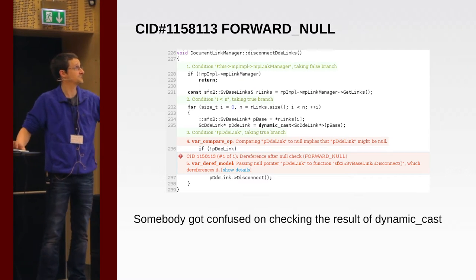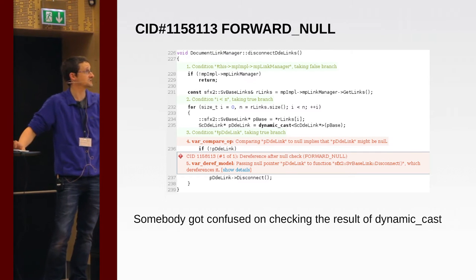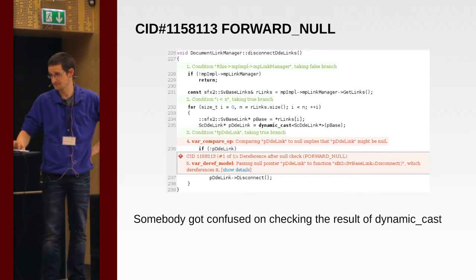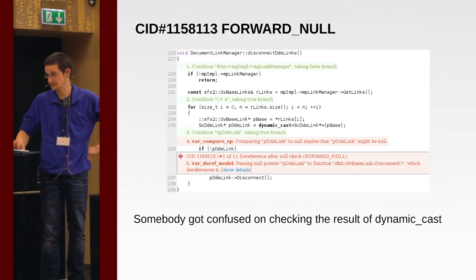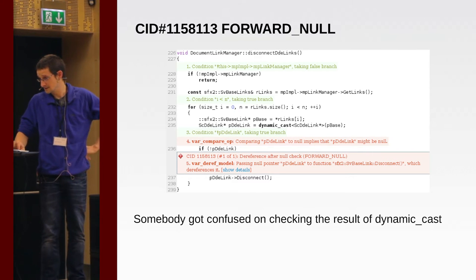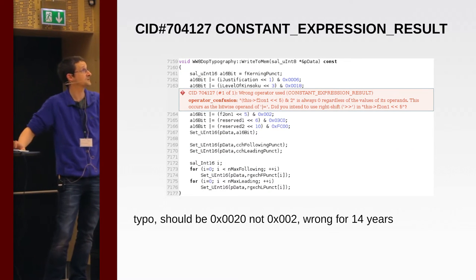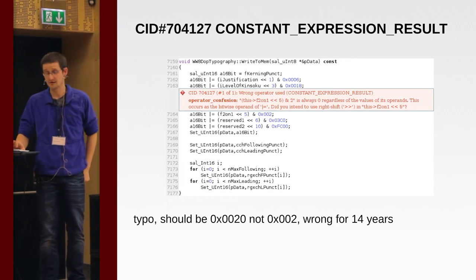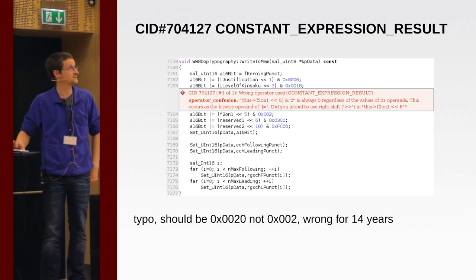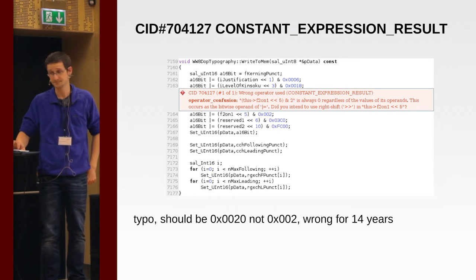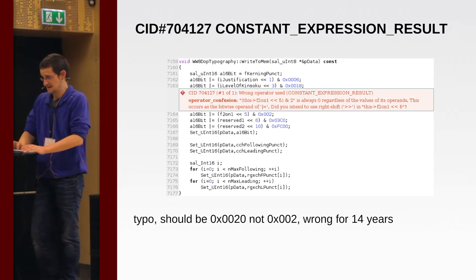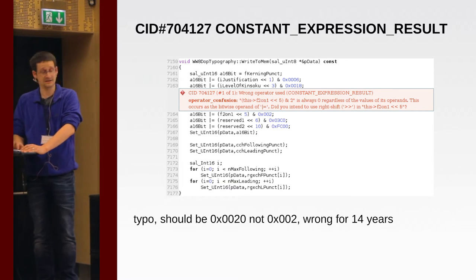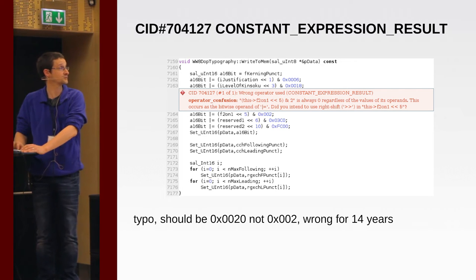Forward nulls: where we dereference something that's null after checking that it was null. The constant expression result — here's one I had in my own code. I'd written this when I was working in StarOffice and I left out a zero, so I had 0,0,2 instead of 0,0,0,2. I'd obviously never found that — it had been there since maybe 2000 or 2001. I discovered it last year, so that's a 13- or 14-year-old bug discovered by Coverity.